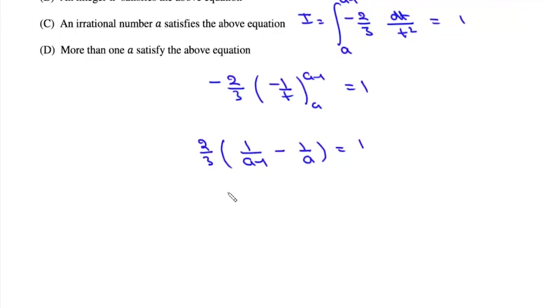Now this will be three a into a minus one equals two, or three a squared minus three a minus two equals zero. So value of a is three plus minus under root of nine plus twenty four by six.